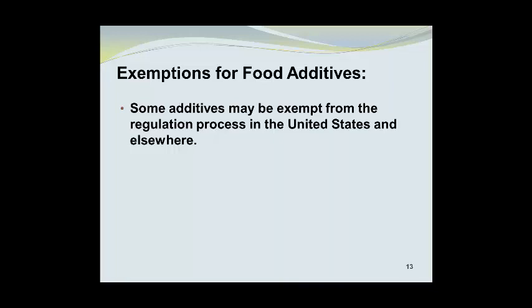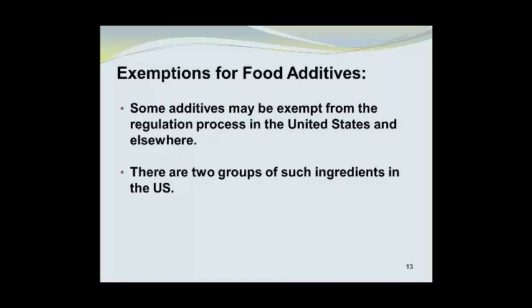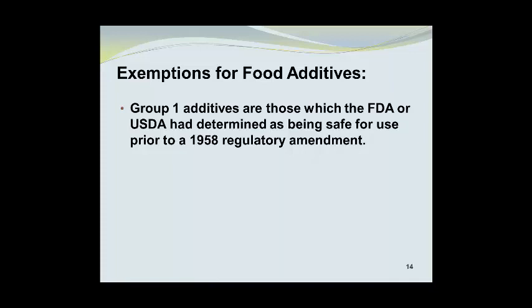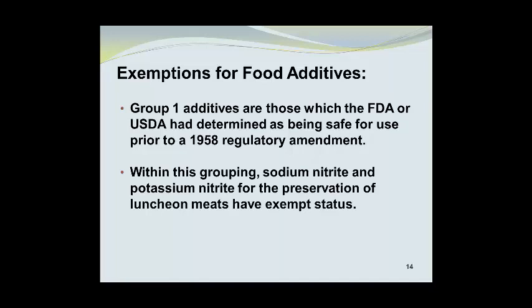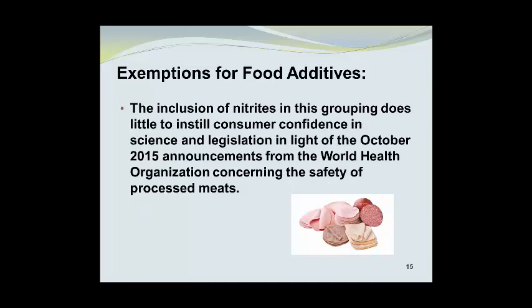Some additives may be exempt from the regulatory process in the United States and elsewhere. There are two groups of such ingredients in the United States. Group 1 additives are those which the FDA or the United States Department of Agriculture has determined as being safe for use prior to a 1958 regulatory amendment. Within this grouping, we have sodium nitrite and potassium nitrite for the preservation of luncheon meats, and these have exempt status. The inclusion of nitrites in this grouping does little to instill consumer confidence in science and legislation in light of the October 2015 announcements from the World Health Organization concerning the safety of processed meats.